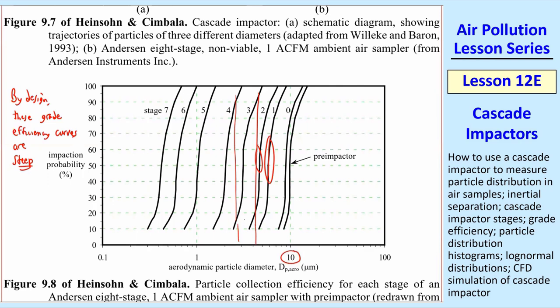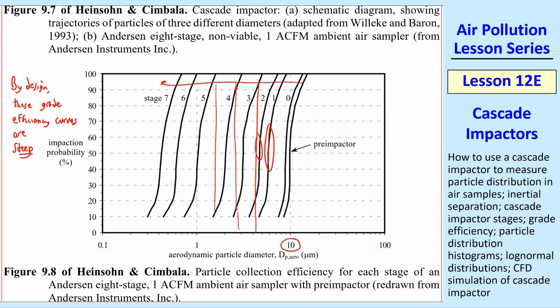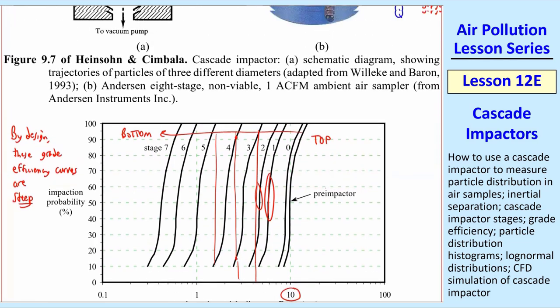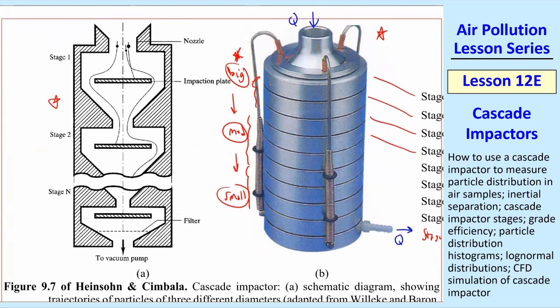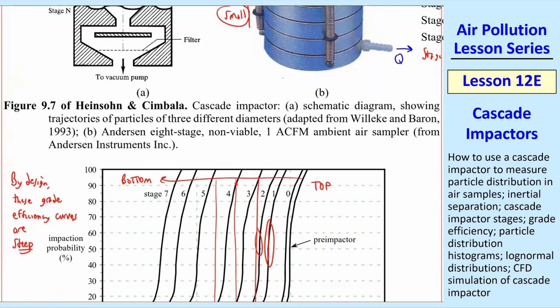And they're pretty separated so that not many particles are collected both in 3 and 4, although there's always some overlap. Now, keep in mind that we go from top to bottom, opposite of what you're used to, not left to right, but right to left, because the first stage is at the top, collecting the big particles, and then the next stages collect smaller and smaller particles as you go down.